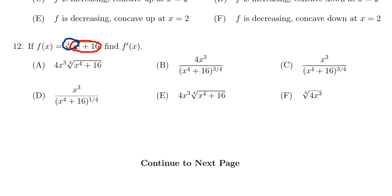So as we compute our derivative, we should recognize that f(x) equals (x^4 + 16) raised to the 1/4 power. When we take the derivative using the chain rule, we'll focus on the outer derivative, the power rule. So we get 1/4 times (x^4 + 16) raised to the -3/4 power.